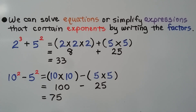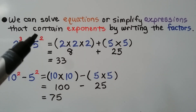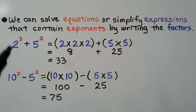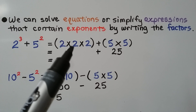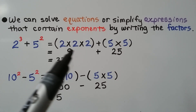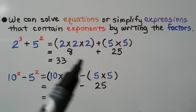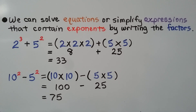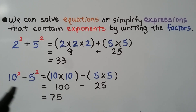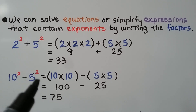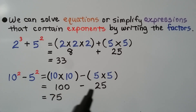We can solve equations or simplify expressions that contain exponents by writing the factors. For 2 to the 3rd power plus 5 to the 2nd power: that means 2 times 2 times 2 plus 5 times 5. 2 times 2 is 4, times 2 is 8; 5 times 5 is 25. So we have 8 plus 25, equal to 33. For 10 to the 2nd power minus 5 to the 2nd power: that's 10 times 10 minus 5 times 5, which is 100 minus 25, equal to 75.